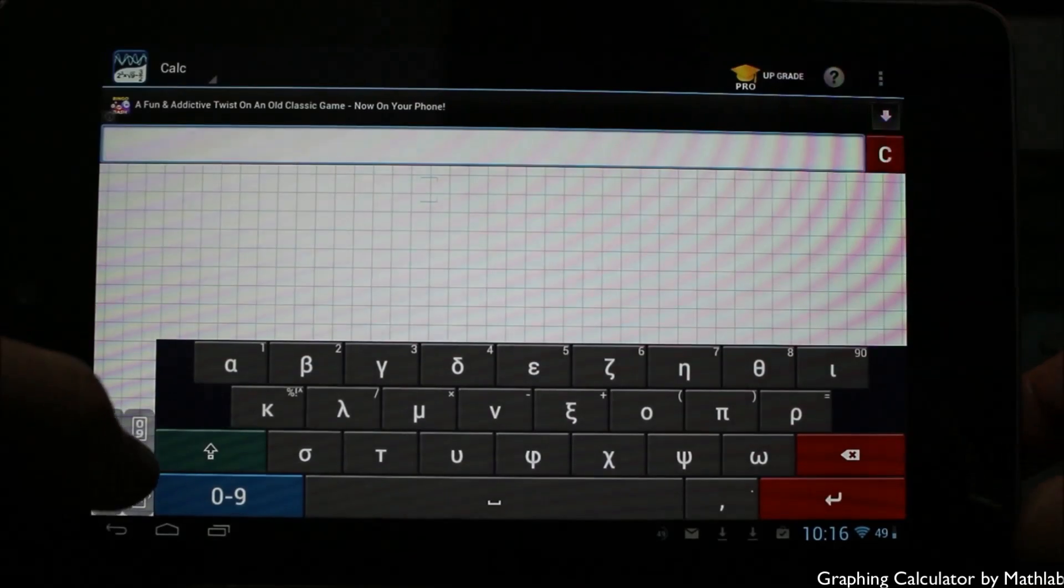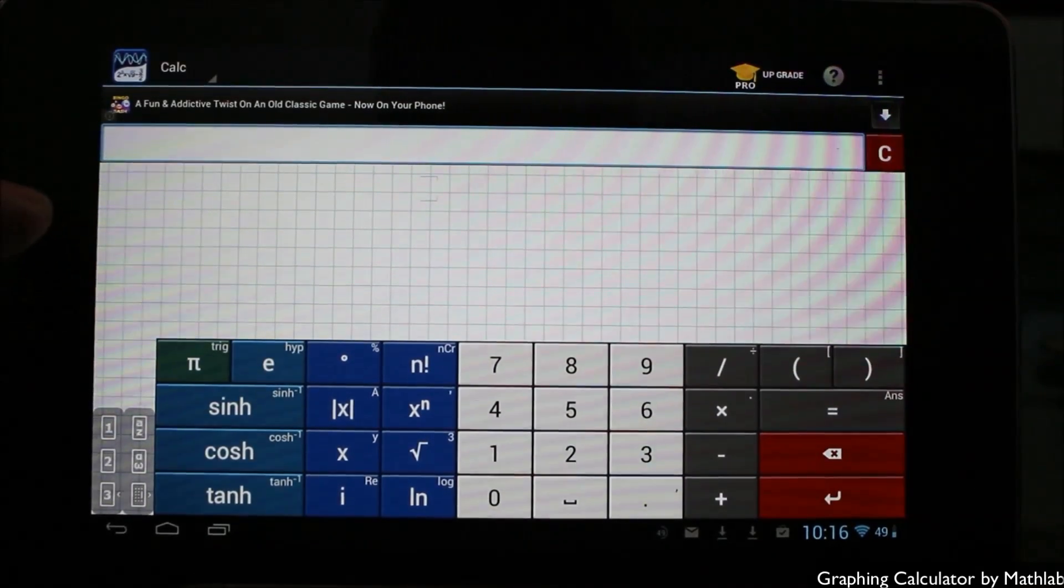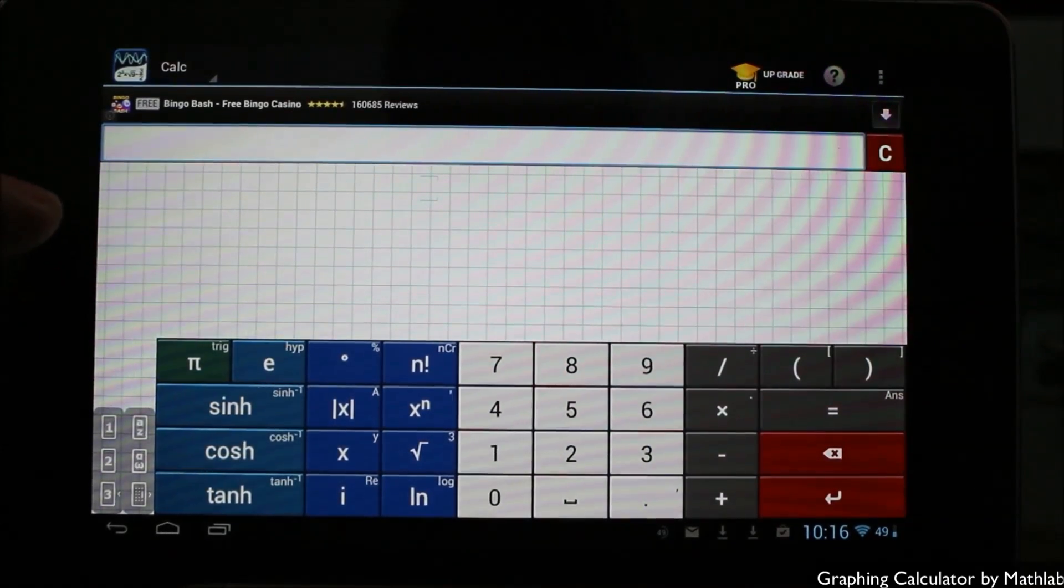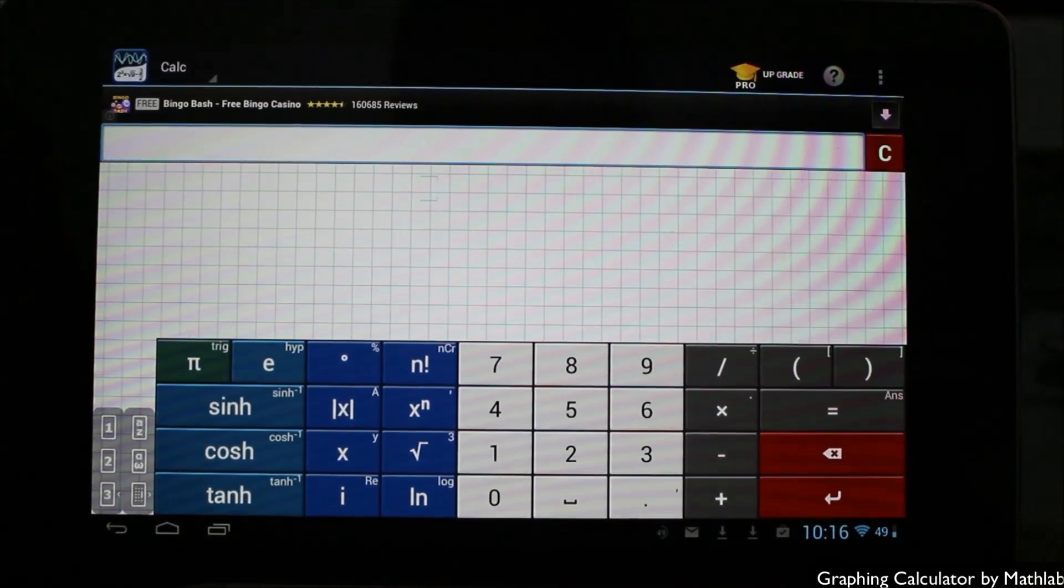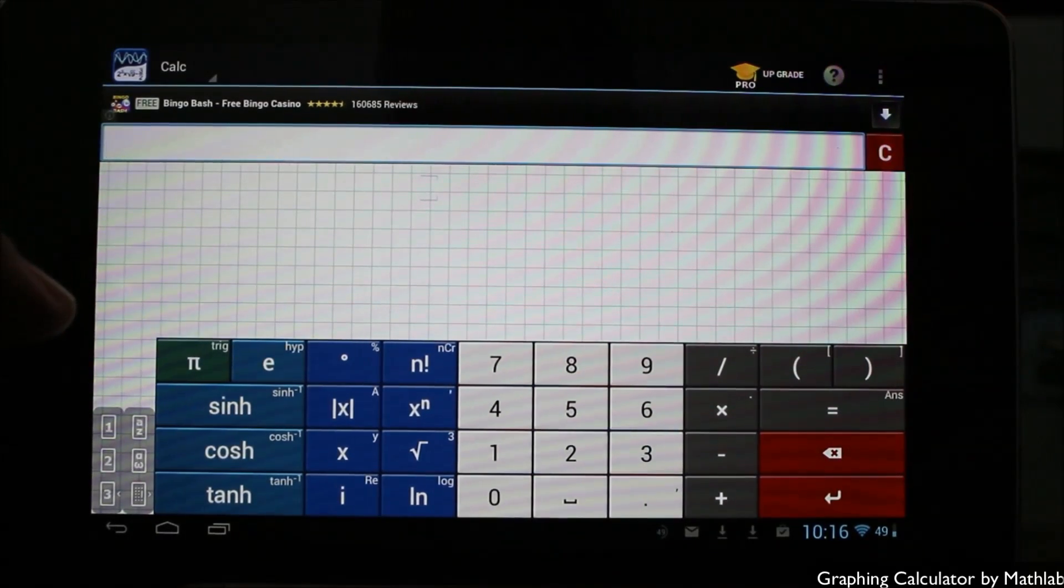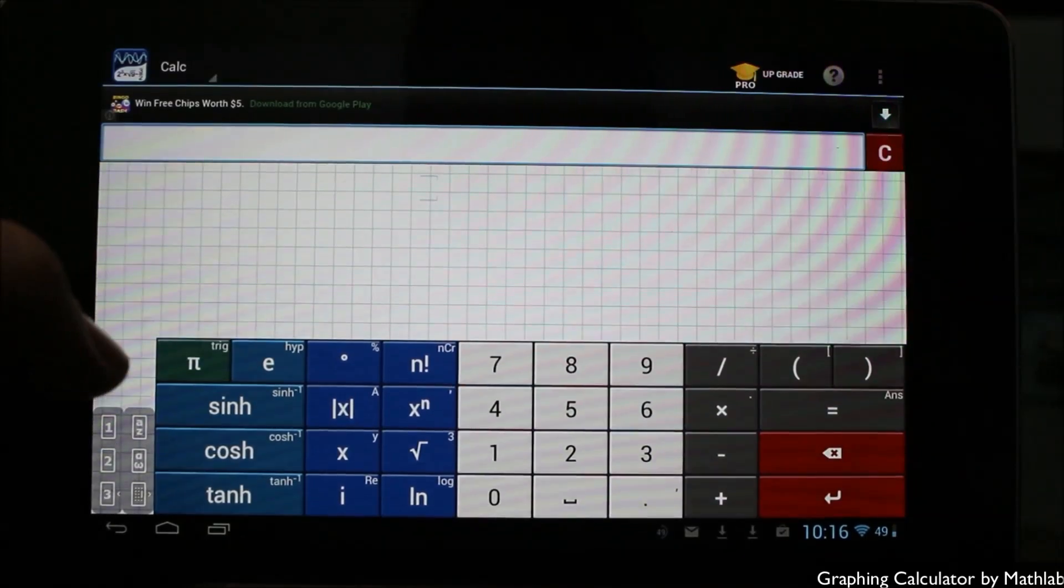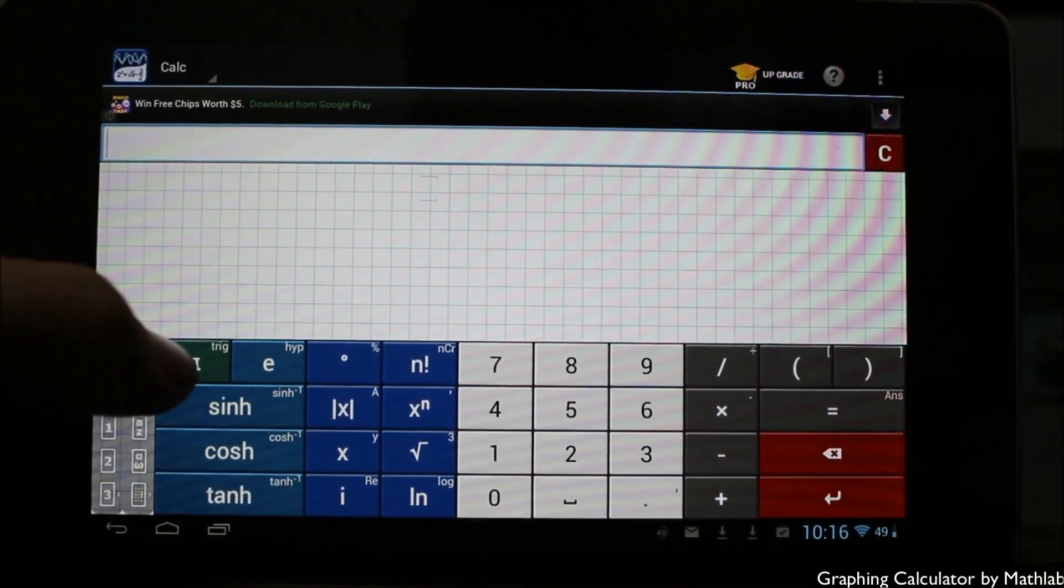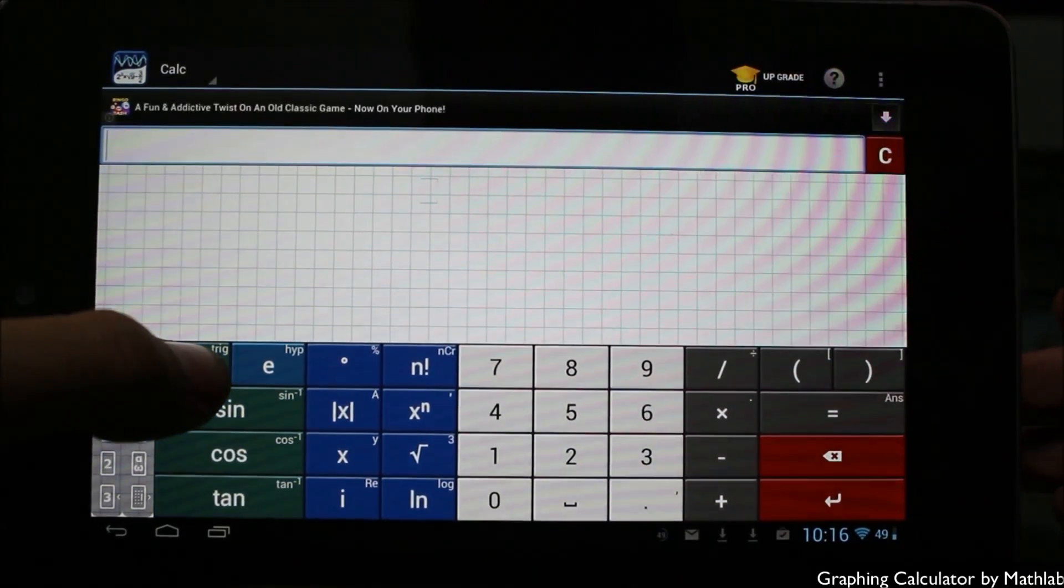You have your main numerical keypad, the expressions, and all that. This is a big portion of the application because the keyboard acts as many different functions. You can actually hold on specific buttons to go into specific modes, for example clicking the trig button will bring you into the trigonometric functions.